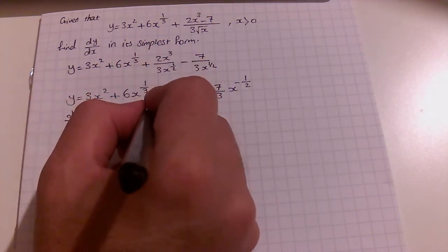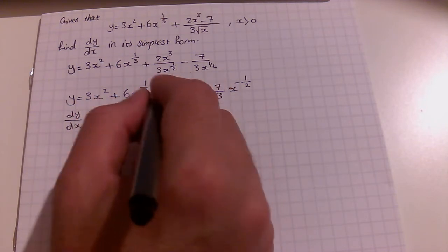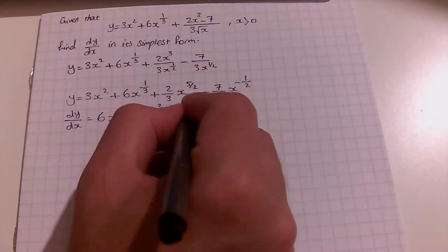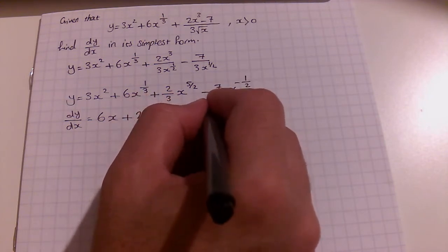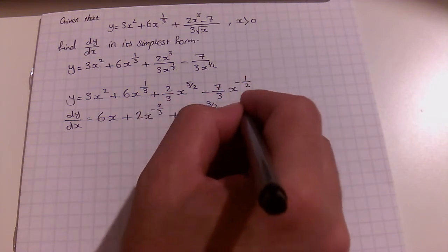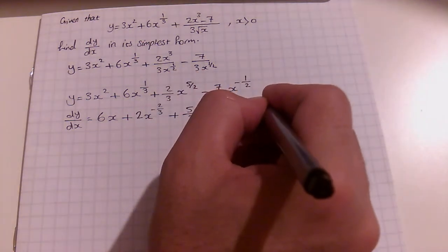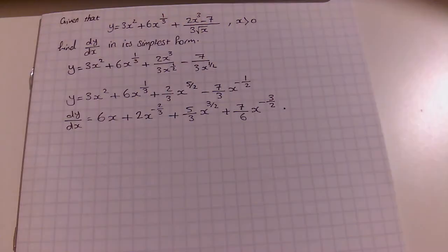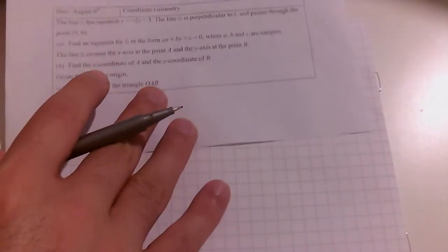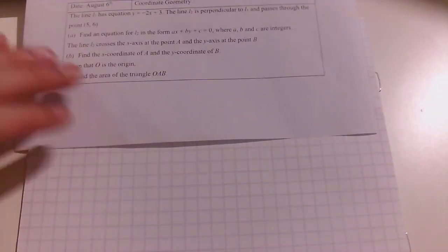Now we can find dy over dx. The derivative of 3x squared is 6x. One third times 6 is 2, so the next term gives 2x to the one third minus one, which is x to the minus 2 over 3. Then 5 over 2 times 2 over 3 is 5 over 3, giving x to the 3 over 2. Minus half times minus 7 over 3 is positive 7 over 6, times x to the minus 3 over 2. This is the simplest form.